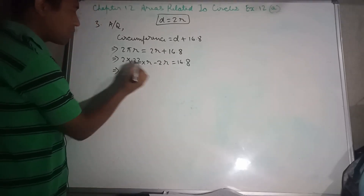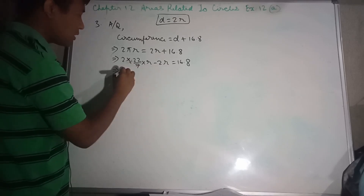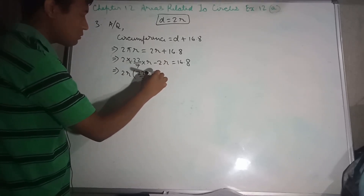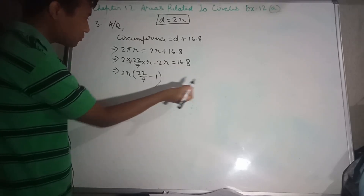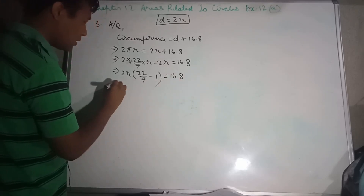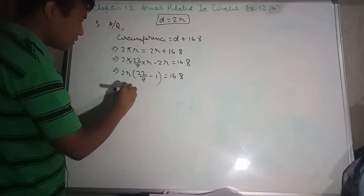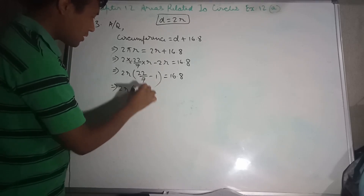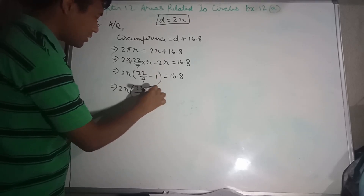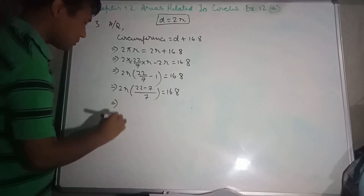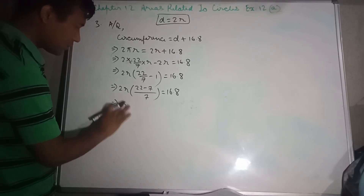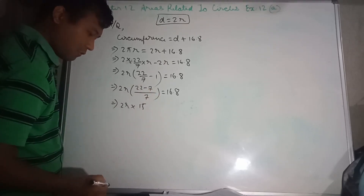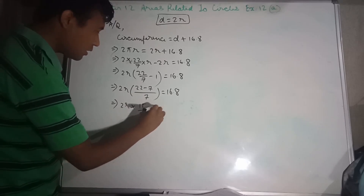This implies 2R into 22/7 minus 2R equals 16.8. Taking common denominator 7: 2R into (22 minus 7) over 7 equals 16.8. This implies 2R into 15/7 equals 16.8.